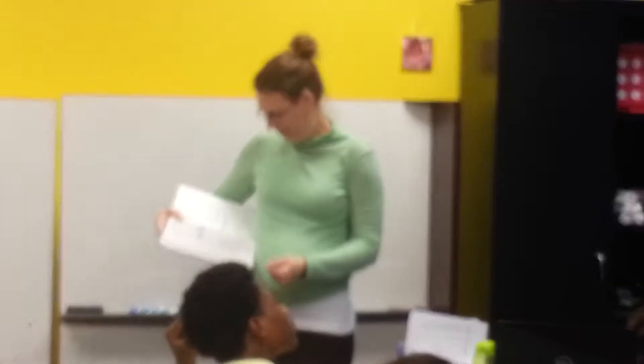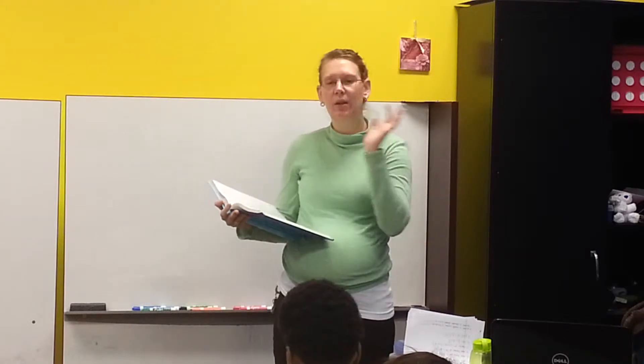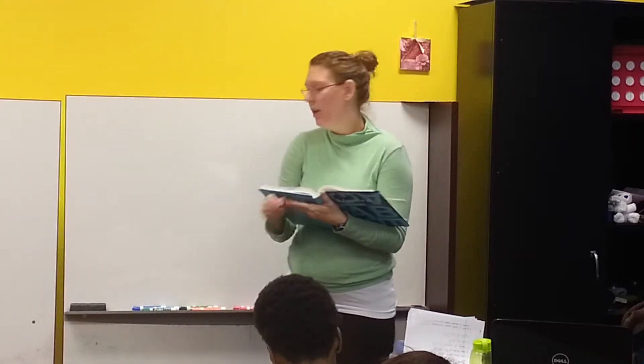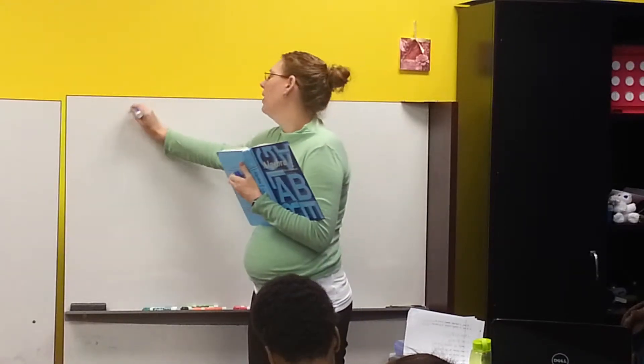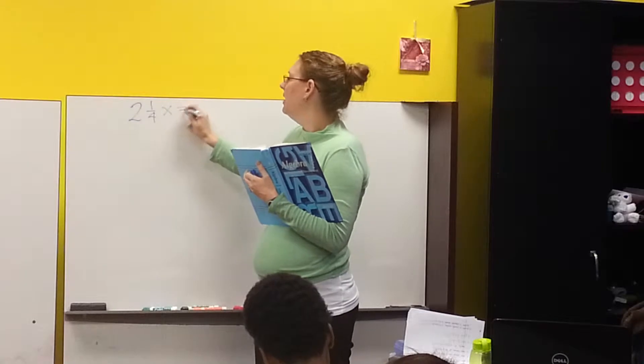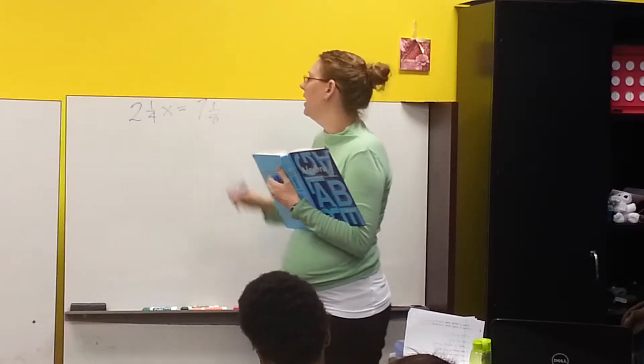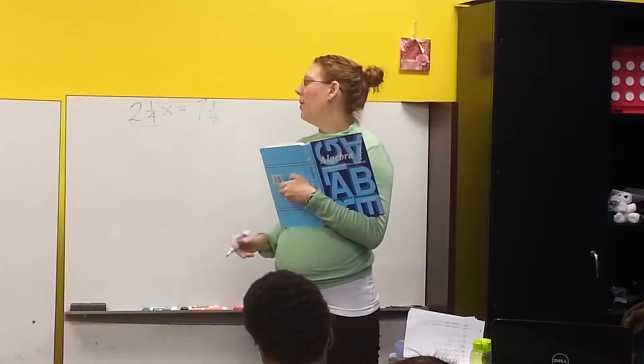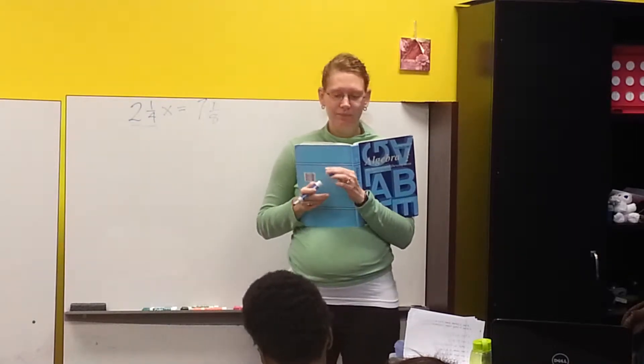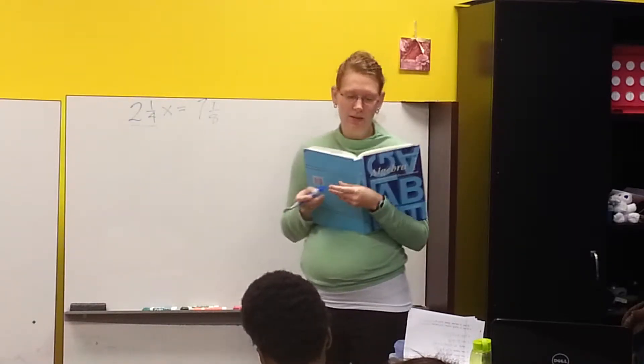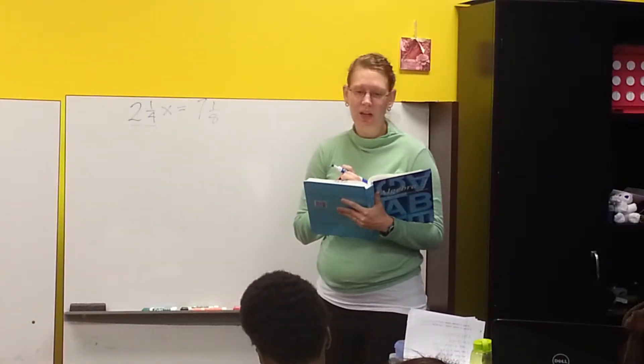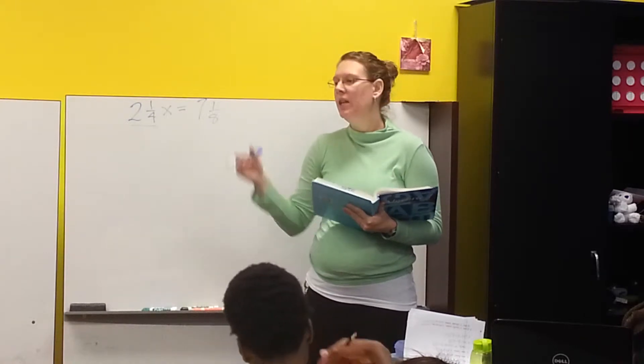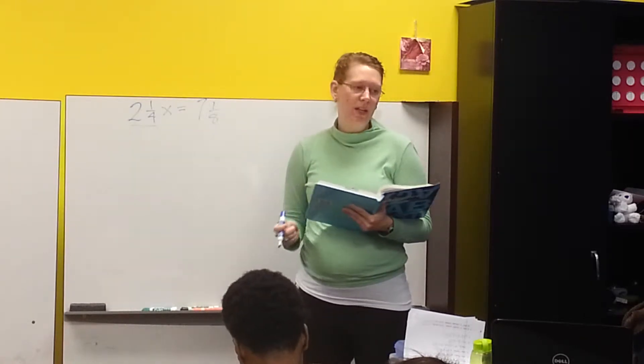All right, so mixed number problems. We spent the last lesson learning about mixed numbers, and when you're just given a plain old equation with those mixed numbers written in, right? So like 2 and a fourth times x equals 7 and an eighth, or something like that. Then we said we need to change them into improper fractions, and then we can solve for x. Well, the only thing that this lesson tells us that's a little bit different is that now we're going to put some words into it. So it's going to mean the same thing. We're just going to have a few words instead of being given very explicit numbers, okay?